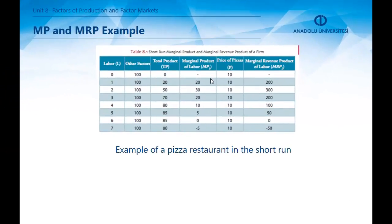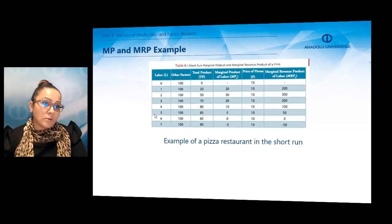Looking at a sample table taken from a pizza restaurant in the short run, this table can be assessed in terms of marginal product of labour and marginal revenue product of labour. The owner has already invested 100 units into other factors of production, and there is no production without any worker.